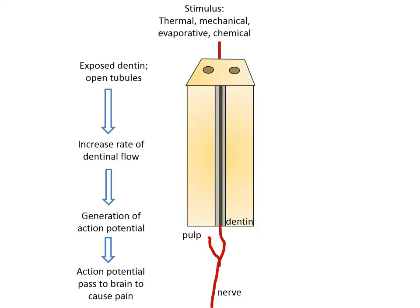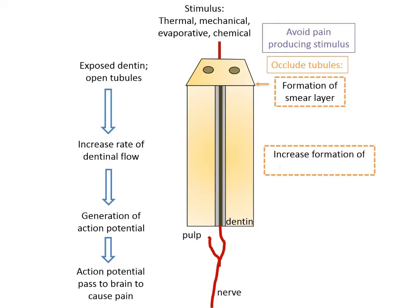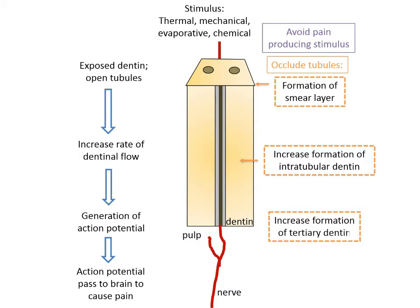The agents used for treatment of dentine hypersensitivity function at one or more of these steps. The first treatment modality is to avoid pain-producing stimuli. If hypersensitivity has already occurred, the second method is occluding the dentinal tubules — via formation of a smear layer, increased intratubular dentine, or increased formation of tertiary dentine. Another technique is to decrease intradentinal nerve excitability.